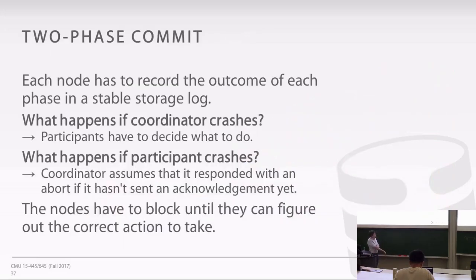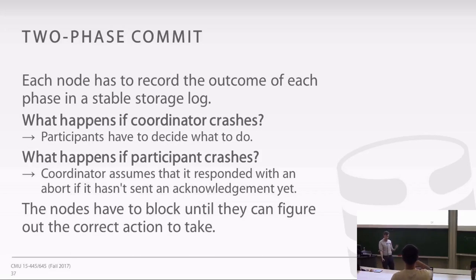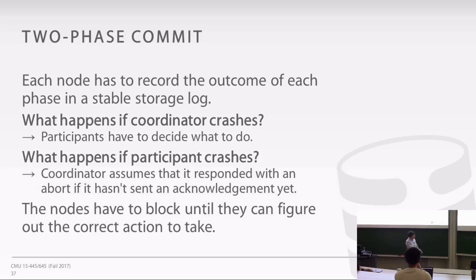The things we have to deal with: if the coordinator crashes, participants have to figure out what to do. In a distributed environment you typically don't get immediate notification that a node goes down — there's a heartbeat, and at some point you don't get the heartbeat and you timeout. Under two-phase commit, you have to have all nodes still up to commit the transaction; if one goes down the whole thing has to abort. If a participant goes down during this, the coordinator assumes the other guy responded with abort. If the coordinator crashes, the connection between client and server just times out and the application has to determine whether the transaction committed.